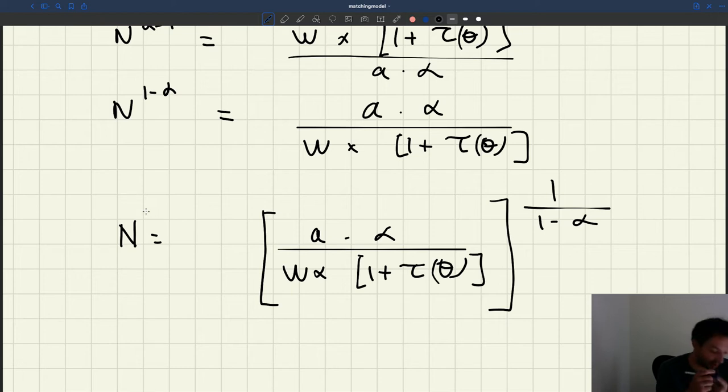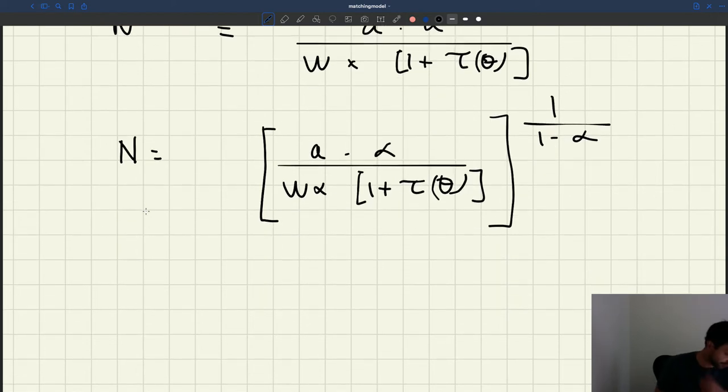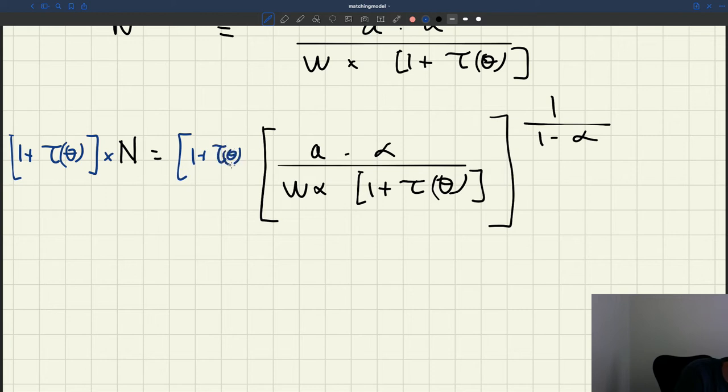It's often easier to think in terms of employment. So what I can do is multiply the right-hand side and the left-hand side by (1 + τ(θ)). So I'm allowed to do that. So here I've just multiplied both sides by this. So (1 + τ(θ)) times n, that's just L, the number of workers that are employed by the firm.